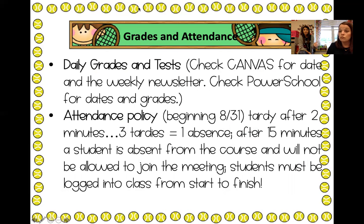You are considered tardy if you try to log on two minutes after class has started. So if you're supposed to be logged on at 9 o'clock and you log on at 9:02, you will be considered tardy. Three tardies will equal an absence — so if there are three instances where you're tardy, you will be considered absent. After 15 minutes, a student will be counted absent from the course and will not be allowed to join the meeting.